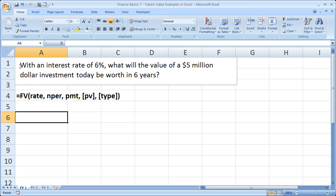Here, the first question is, with an interest rate of 6%, what will the value of a $5 million investment today be worth in six years? I've got the future value function right here with all the arguments, and I've covered this more in depth in a previous lesson. So I'm not going to do it too much here. Let's dive right in, and I'll explain as we go.